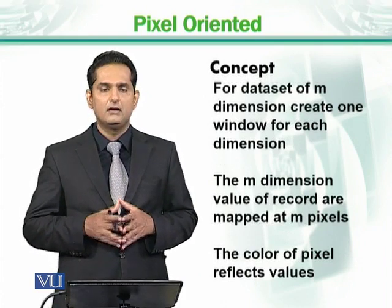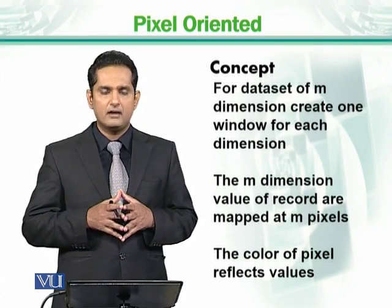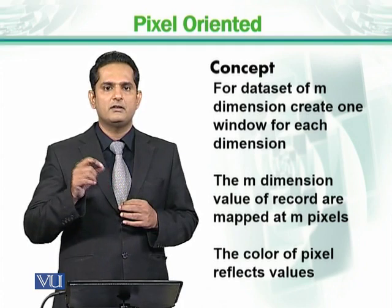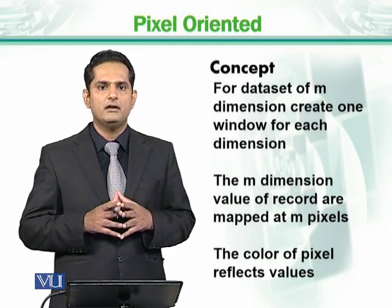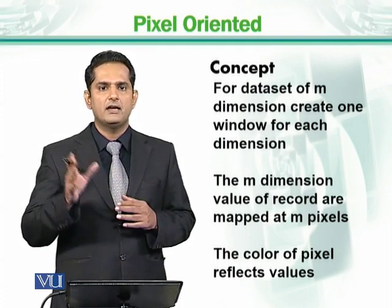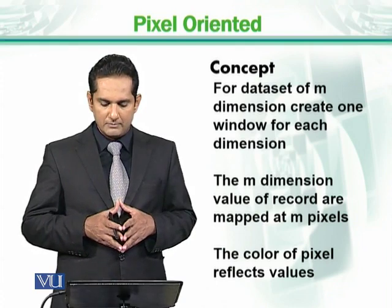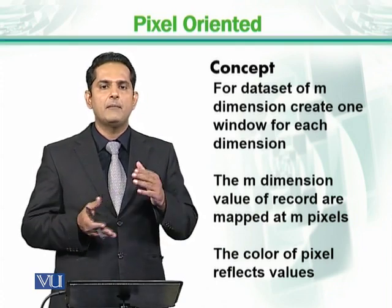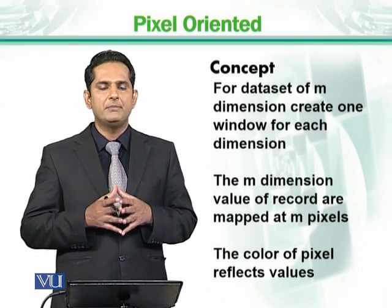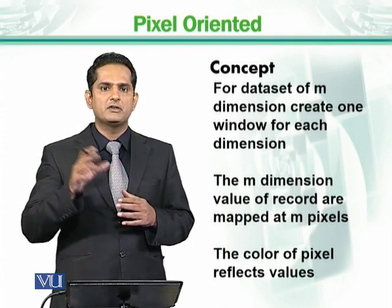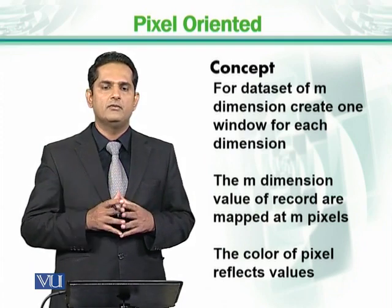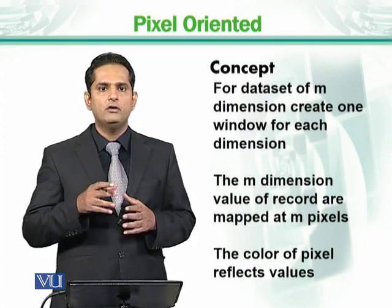The basic concept is that if we have an m-dimensional data array or m-dimensional image, then we will create a window for each dimension. This means that as many data objects as we have, we will keep all of them together across m dimensions. We will map these m dimensions on m pixels, creating an m-dimensional array with pixel values. The total matrix will be m by m.